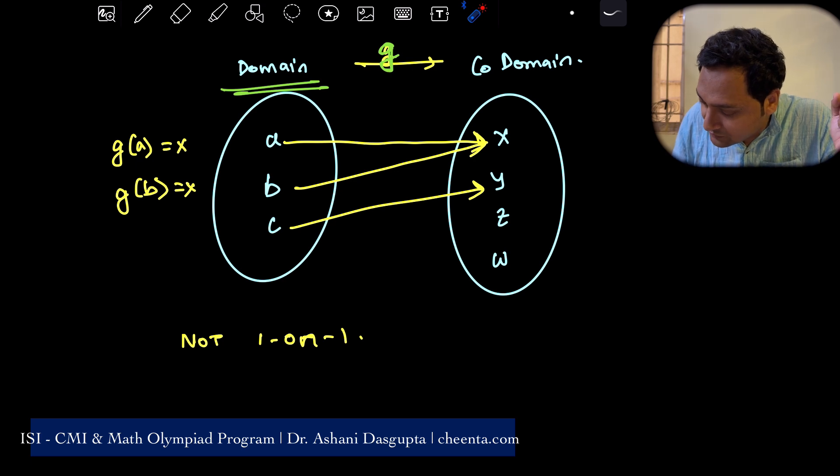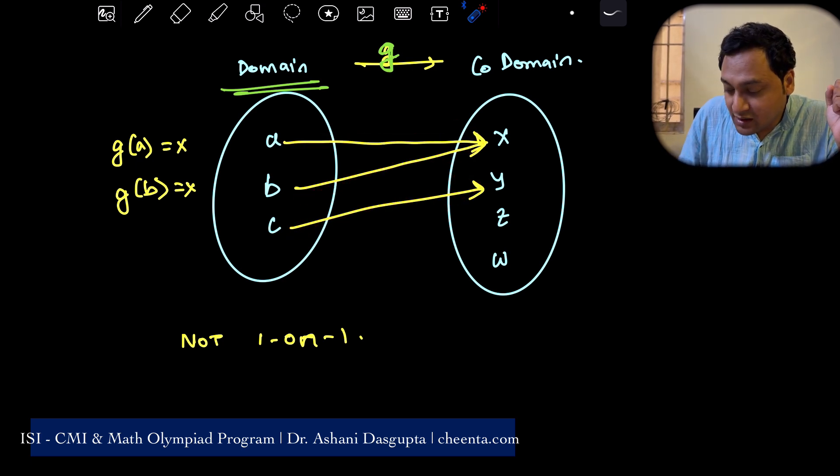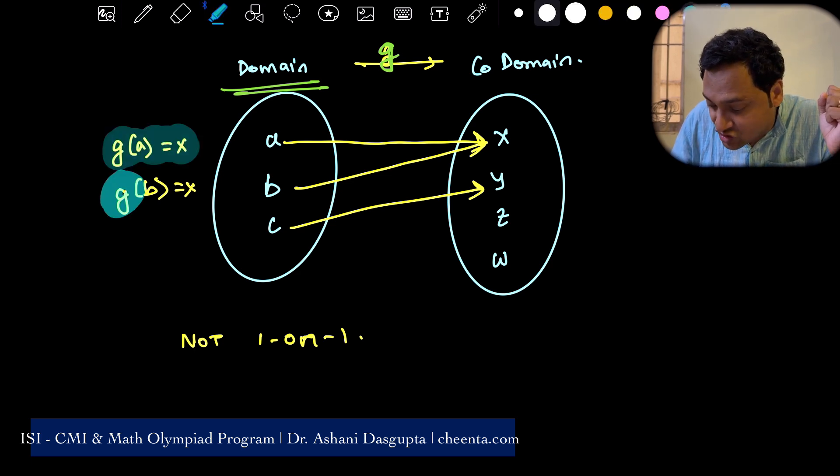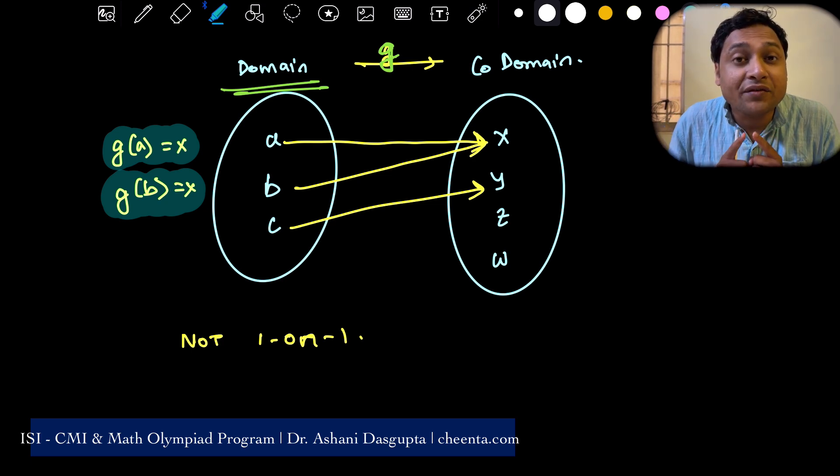The function is like this: a goes to x, b goes to x, c goes to y. So that means g of a is x, g of b is also x. So two of the input values are going to the same output value. Therefore, the function is not one to one.